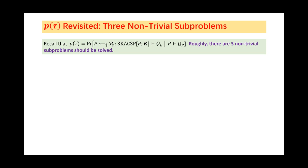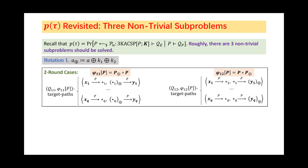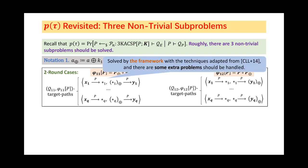In more detail, there are three subproblems that should be solved. More specifically, the first two subproblems are both two-round cases, where the constructions are Φ₁₁ and Φ₁₂ respectively. During our proof, we solve these two problems by the general framework with the techniques adapted from Chen's work. Of course, extra problems should be handled.